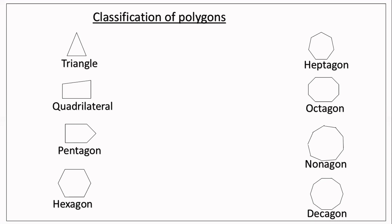Next is nonagon — nine sides and nine angles. Last is decagon — ten sides and ten angles are there in a decagon. These are the few classifications of polygons.